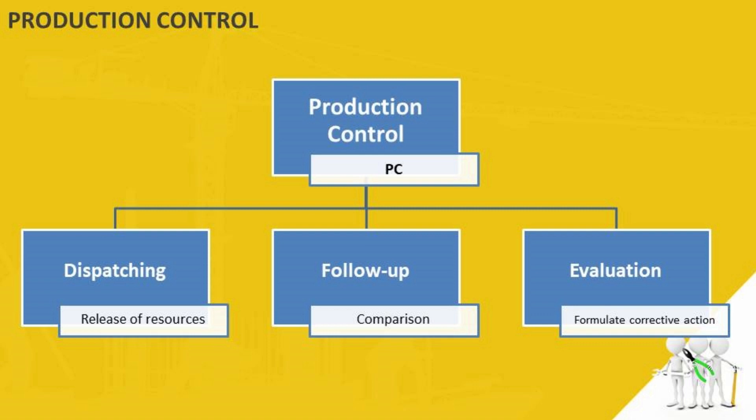Quantity of production is controlled during dispatching. The enterprise or industry is required to exercise effective control over its inventory — both material and tools — to prevent overstock and out-of-stock conditions. Immediate replacement of obsolete and breakdown parts is very essential to continue production. Machine efficiency is significantly affected by the system of periodic maintenance of plant and machinery.